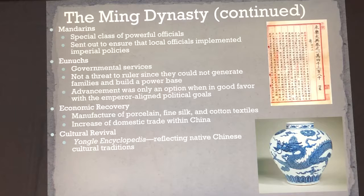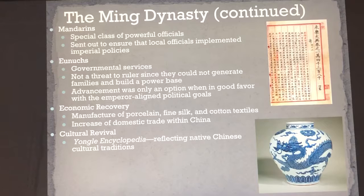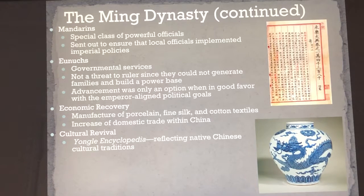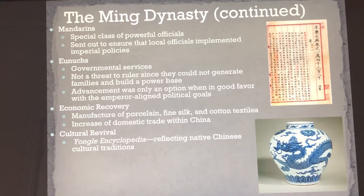One of the things that will happen is the economy will recover. We will see that porcelain, silk, fine textiles, and cotton textiles will be traded out of China. The Chinese government increased domestic trade by gaining control of who's coming in and out of China. They also create paper money, which will force many Europeans and Middle Eastern people to trade their gold and silver for paper money.